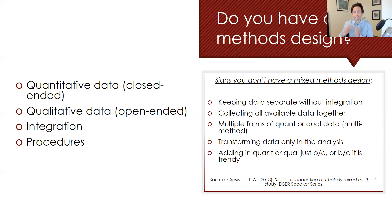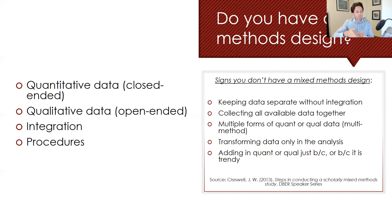The fourth sign is around transforming data only at the end — that's not what we really seek here. For example, if you gave a quantitative survey, analyzed the results, and then wanted to hone in on those specific results in the second phase, that would transform your overall study right in the middle. And finally, just adding in the quantitative or qualitative component because it's a trendy thing to do does not merit a mixed methods design.